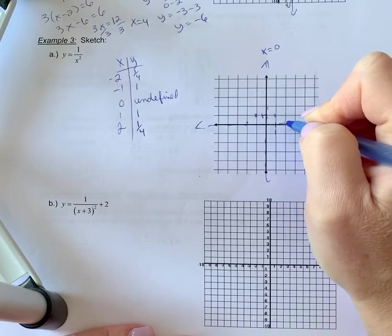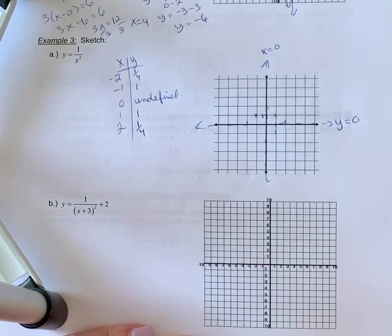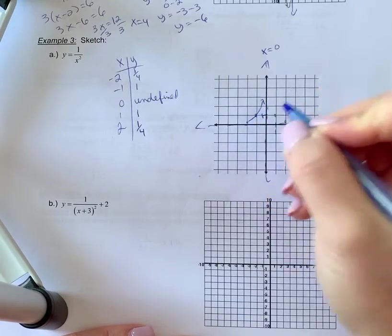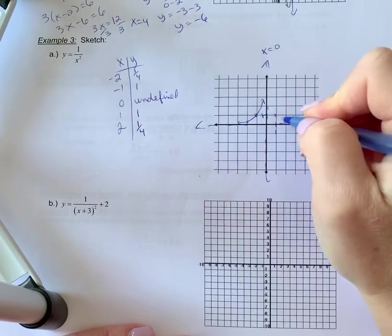1 and 1, 1 and a quarter. Okay, so this is actually going to approach - we've got enough points there because we just know it approaches the asymptotes.